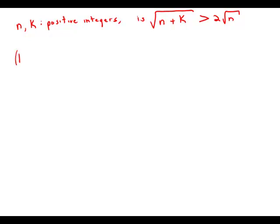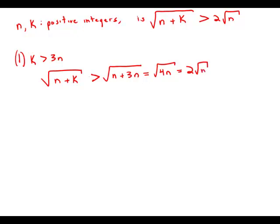Statement 1 tells us that k is greater than 3n. This means that n plus k would have to be greater than n plus 3n, which is the square root of 4n. The square root of 4n is 2 times the square root of n.